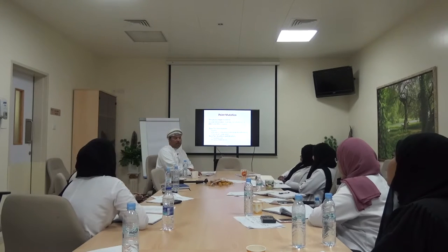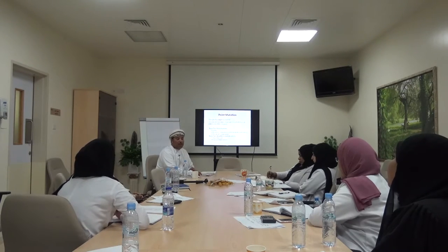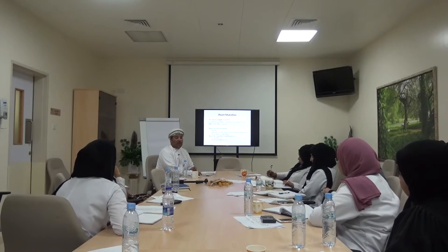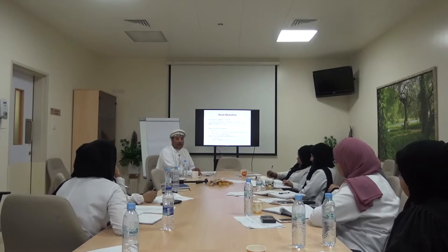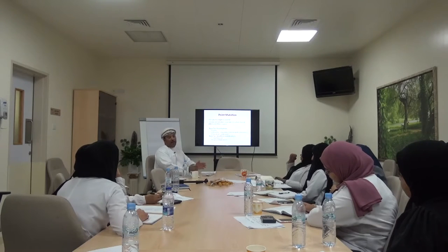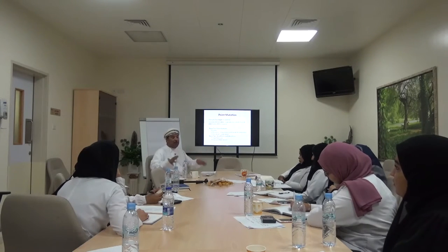Triplet repeat examples include Huntington disease (CAG repeats). Other important examples are Fragile X syndrome and myotonic dystrophy. If you know Fragile X and Huntington well, you can handle many exam questions. An important point: in Huntington disease, a carrier cannot exist since it follows autosomal dominant inheritance — do not say 'carrier' for Huntington in a viva exam.